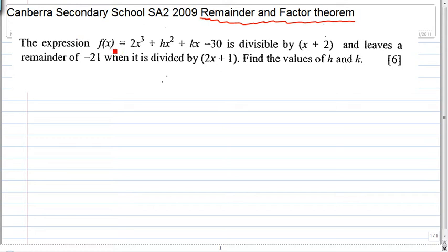The expression f(x) is equal to 2x cubed plus hx squared plus kx minus 30. And this expression is divisible by x plus 2 and leaves a remainder of minus 21 when divided by 2x plus 1. Find the values of h and k.